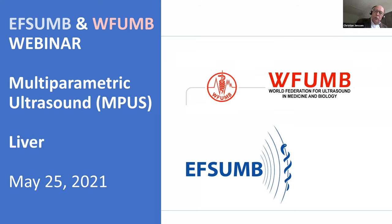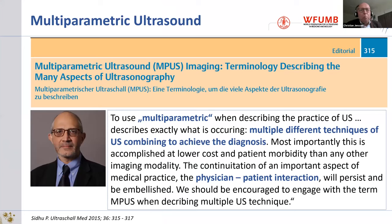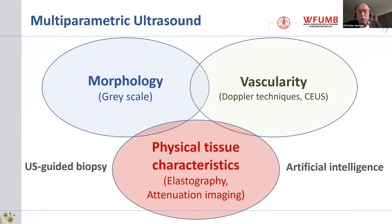I will introduce you to the term multi-parametric ultrasound. It was in 2015 that Paul Situ, a radiologist from London and the current past president of EFSM, compared in an editorial ultrasound to other imaging modalities. He said that ultrasound, like MRI or CT, has a lot of possibilities to characterize lesions and tissues — not only B-mode, but also vascularity, perfusion, stiffness, and attenuation.